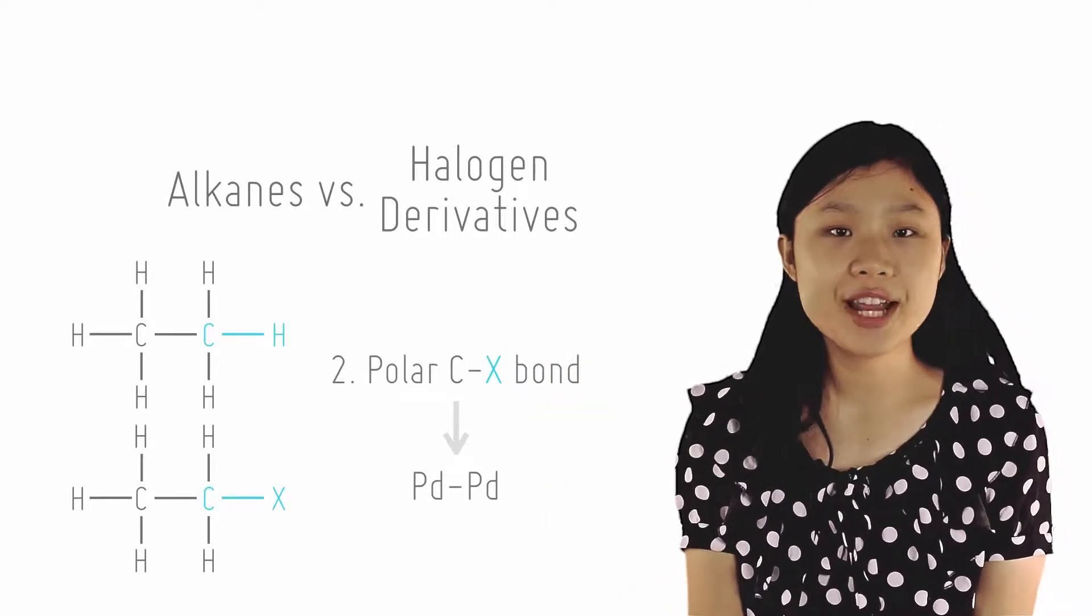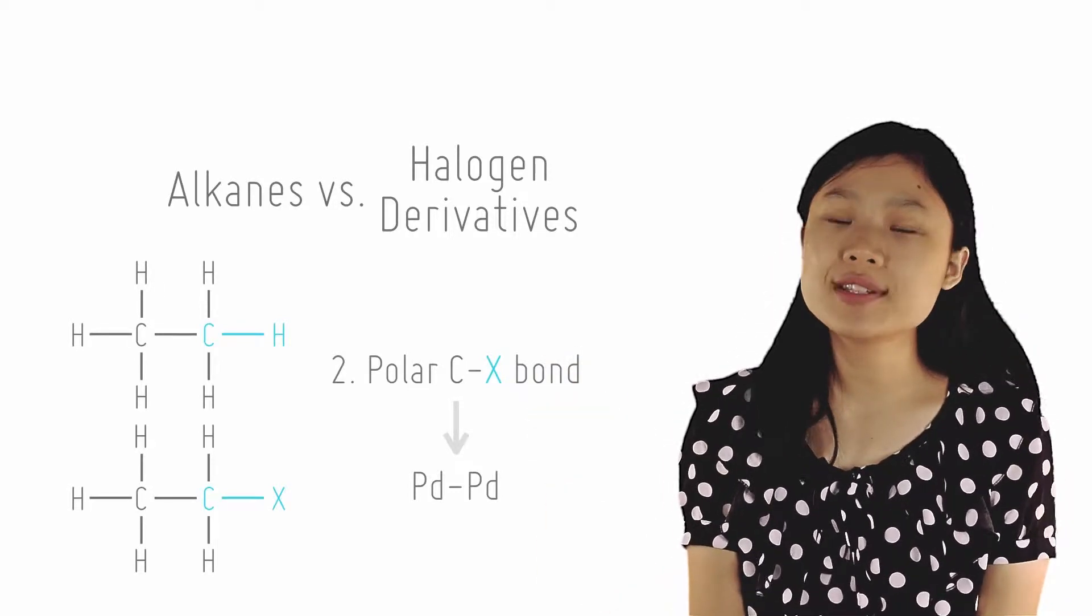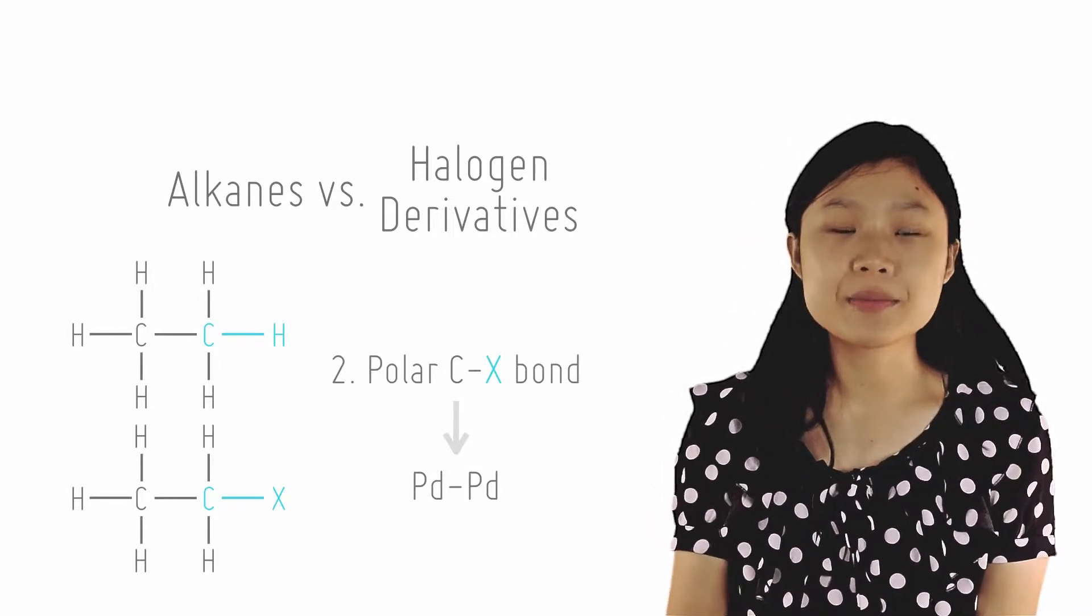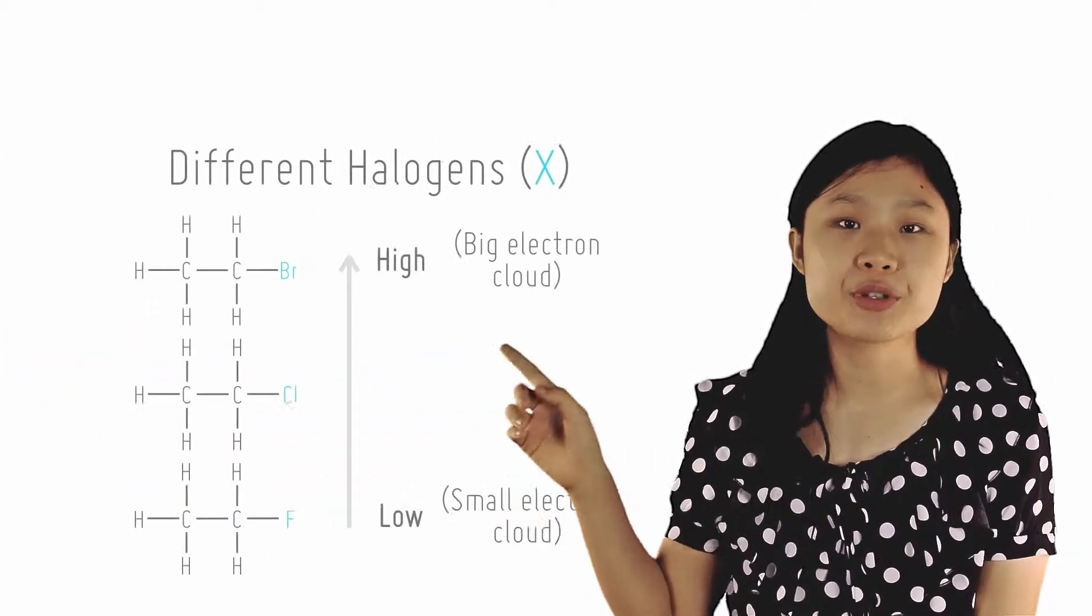Comparing the boiling points of different halogen alkanes, similar reasoning also applies. For compounds of the same alkyl groups, meaning they have the same number and arrangement of carbon atoms,